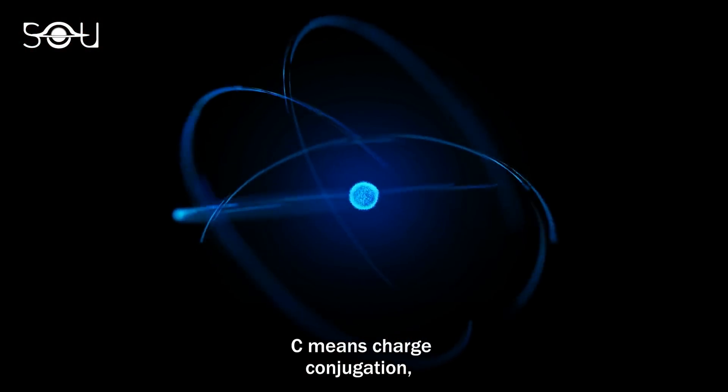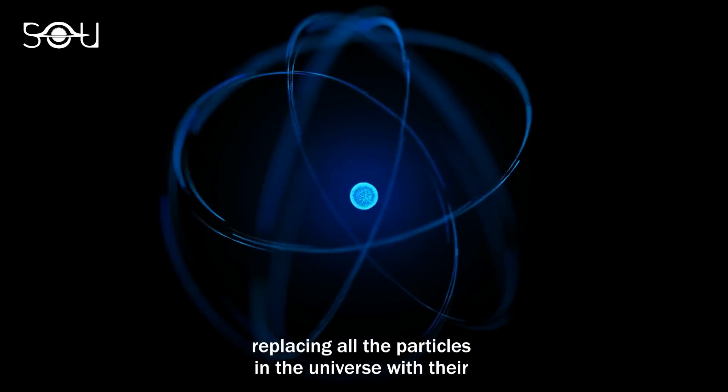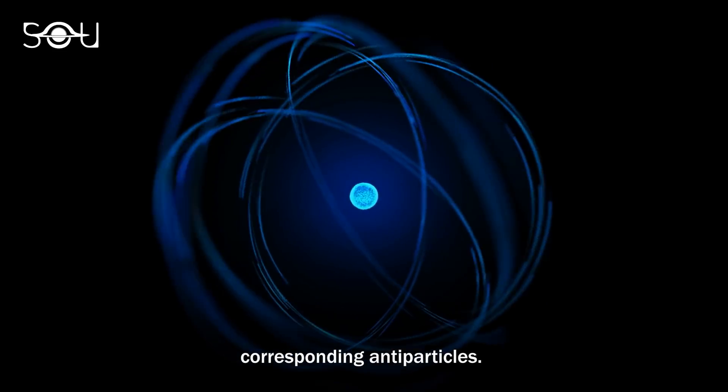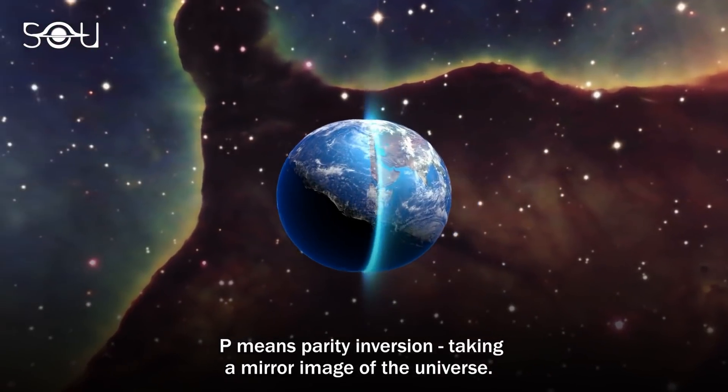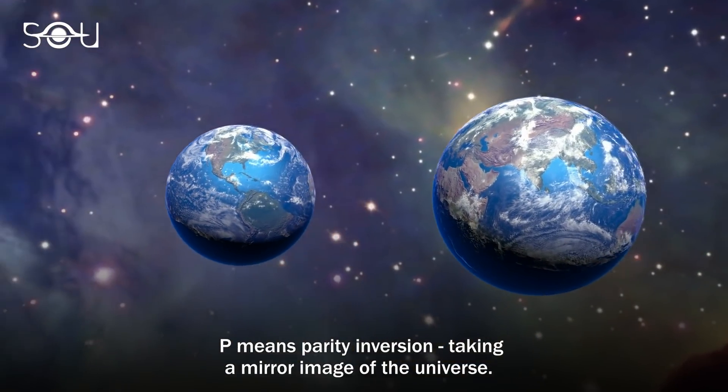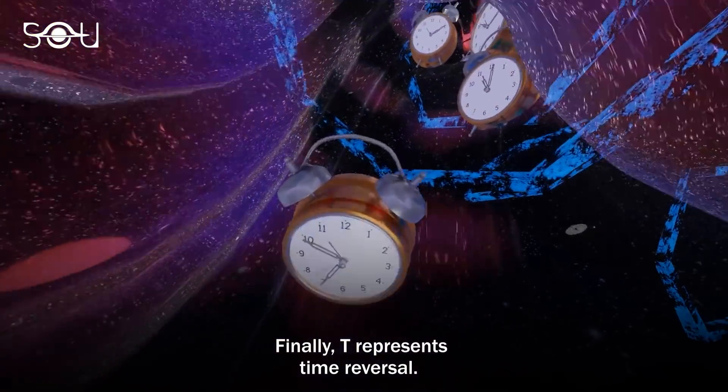C means charge conjugation, replacing all the particles in the universe with their corresponding antiparticles. P means parity inversion, taking a mirror image of the universe. Finally, T represents time reversal.